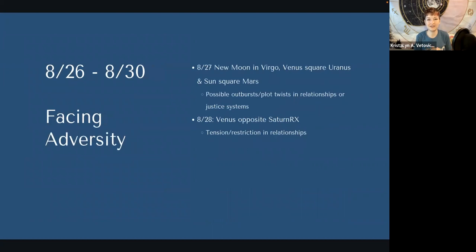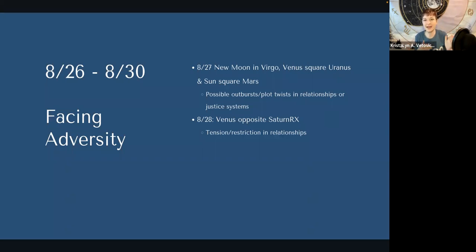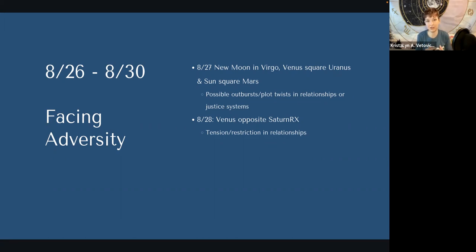Then we come to August 27th — we have the new moon in Virgo, Venus square Uranus, and the sun square Mars. So there are some possible outbursts and plot twists in relationships or even the justice systems. The moon is here creating a new cycle that we will be able to watch unfold over the next six and then twelve months. Venus square Uranus is saying: hey, there's an issue here, we need to address it. The sun square Mars — which is now in Gemini — is saying: there's some communication and thinking we need to do about this, and we need to make sure all of this is right before we dive in and get too carried away with our energy and exuberance.